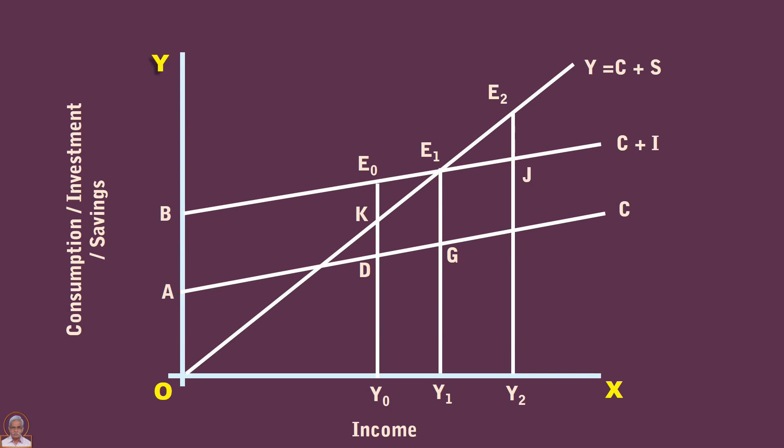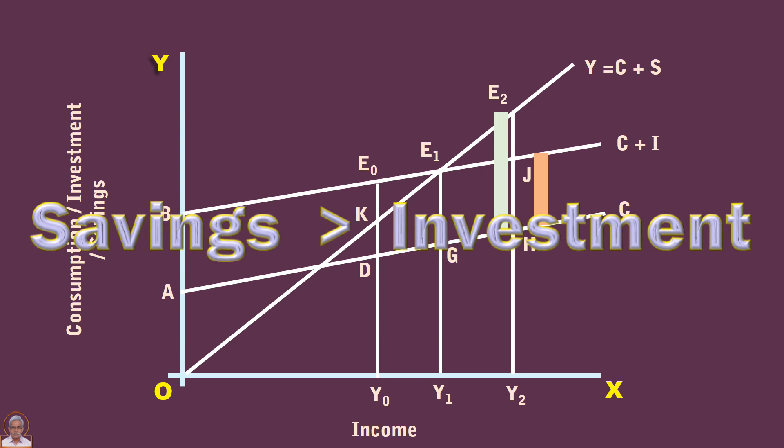Two: the community's planned savings is HE2, but planned investment is HJ. Savings is greater than investment. There is an excess supply condition in the economy.